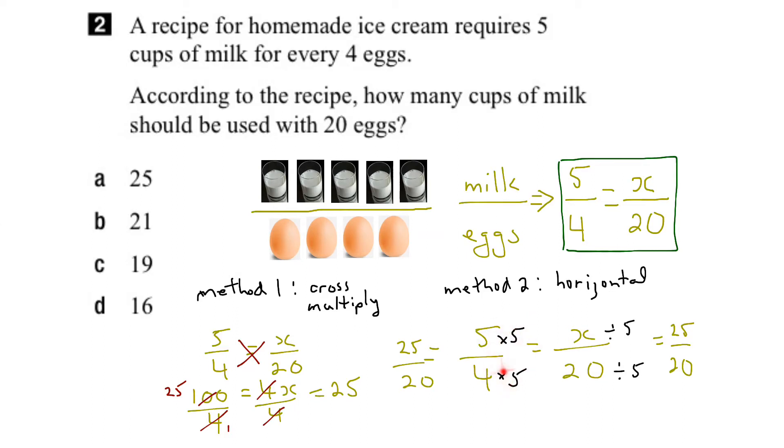Notice that what we're doing to the top and bottom is either multiplying or dividing, not addition or subtraction. Using both of these methods, what we've found out is that we will need 25 cups of milk if we use 20 eggs to make our homemade ice cream.